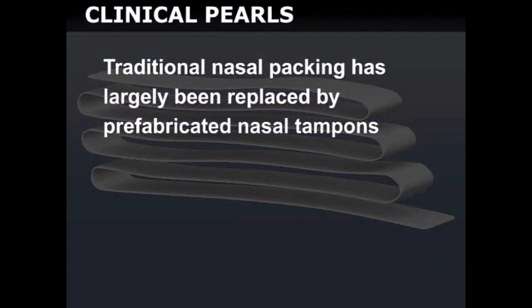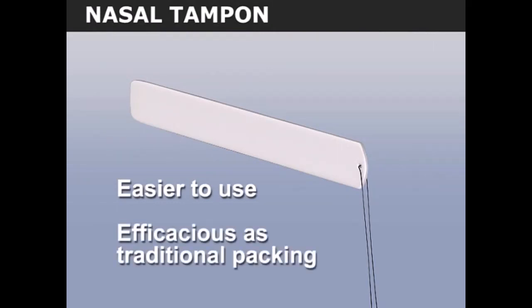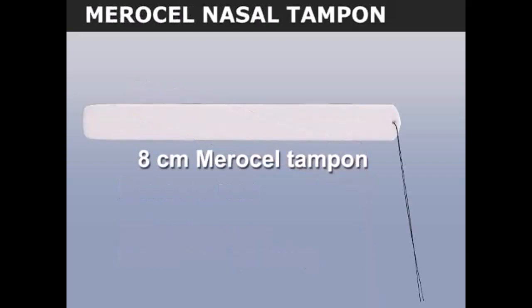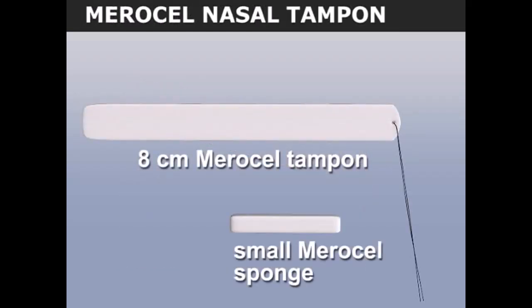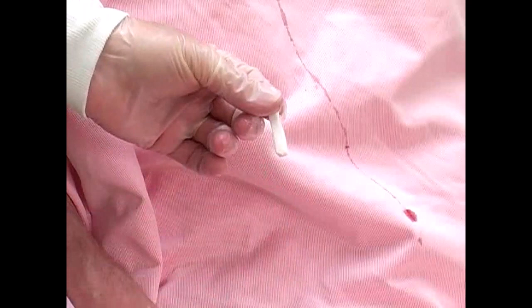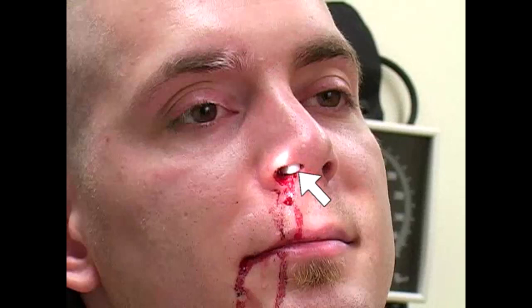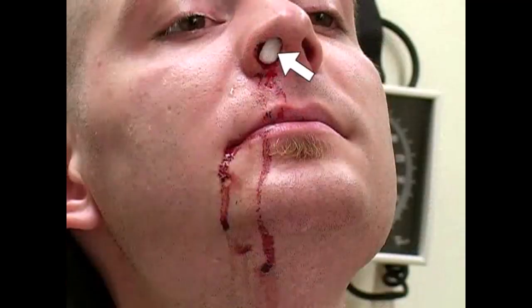Traditional nasal packing has largely been replaced by prefabricated nasal tampons. Nasal tampons such as the Merocel tampon are easier to use and as efficacious as traditional packing and should be utilized if available. In addition to the 8-centimeter Merocel device, smaller Merocel sponges are available for minor anterior epistaxis. To insert the smaller Merocel sponge, first lubricate it with topical antibiotic ointment such as bacitracin, then insert it into the anterior portion of the nasal cavity just deep enough so that it rests inside the nares.